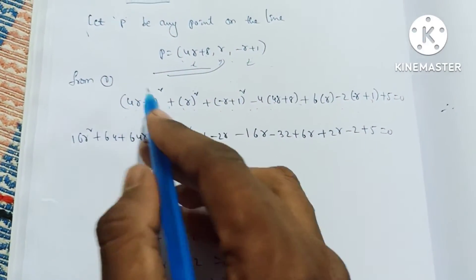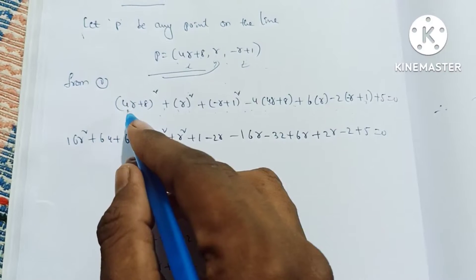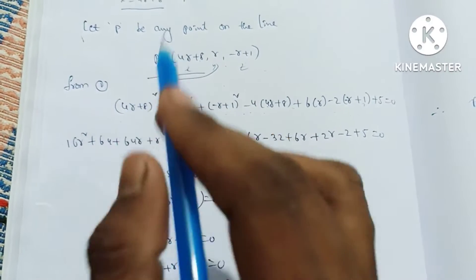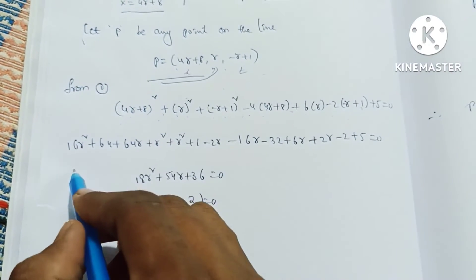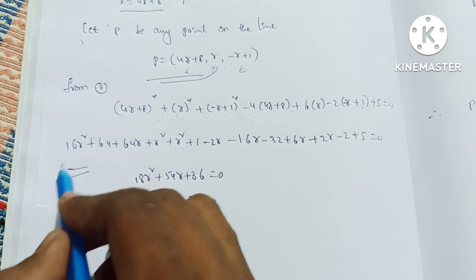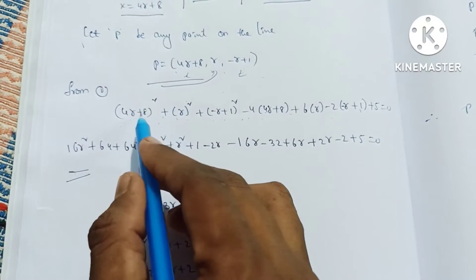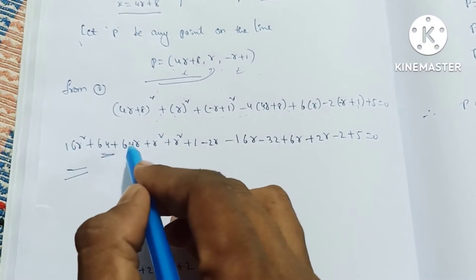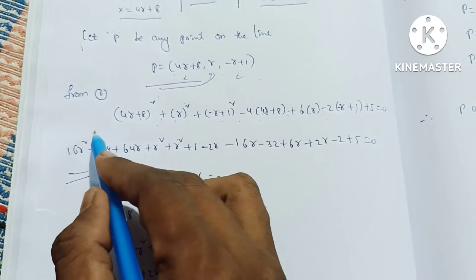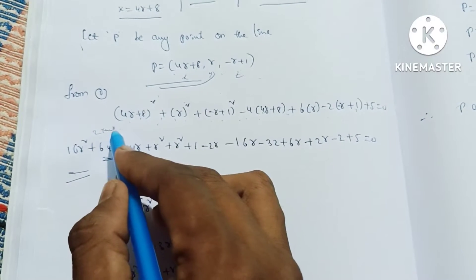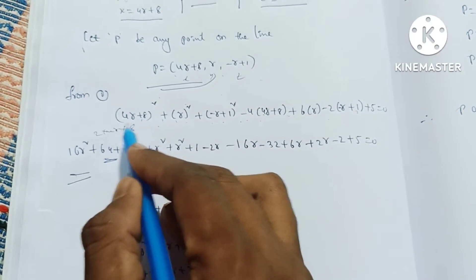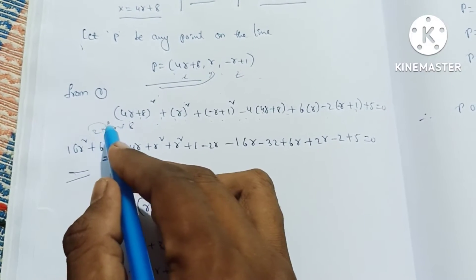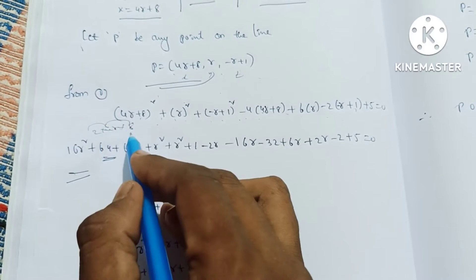Using (a plus b) whole square equals a squared plus 2ab plus b squared: (4r) whole square is 16r squared, plus 8 squared is 64, plus 2ab is 2 into 4r into 8, which is 64r.